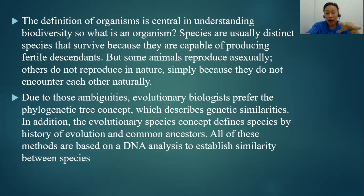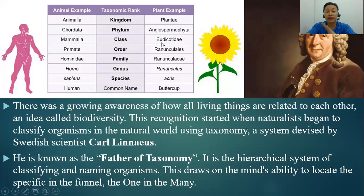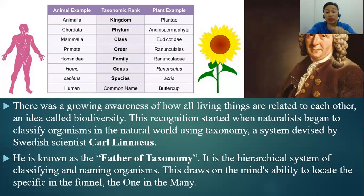We have here a table of classification. There was a growing awareness of how all living things are related to each other — an idea called biodiversity. This recognition started when naturalists began to classify organisms using taxonomy. Taxonomy is a branch of biology that studies a system devised by Swedish scientist Carl Linnaeus, which describes the genetic similarities of each organism.